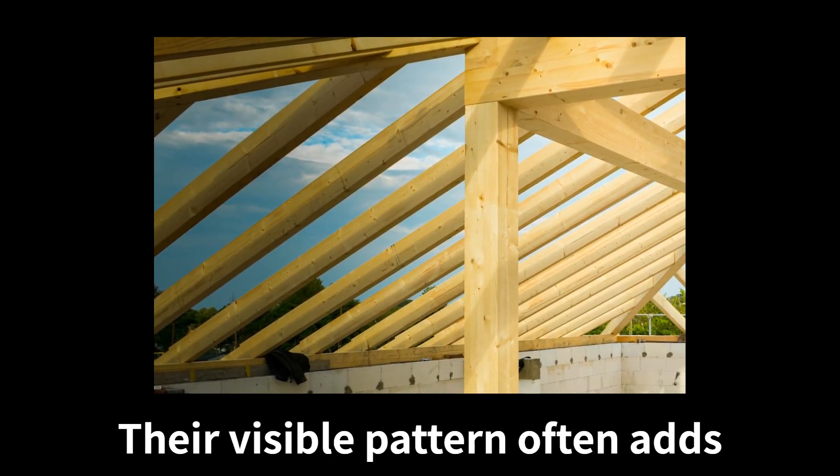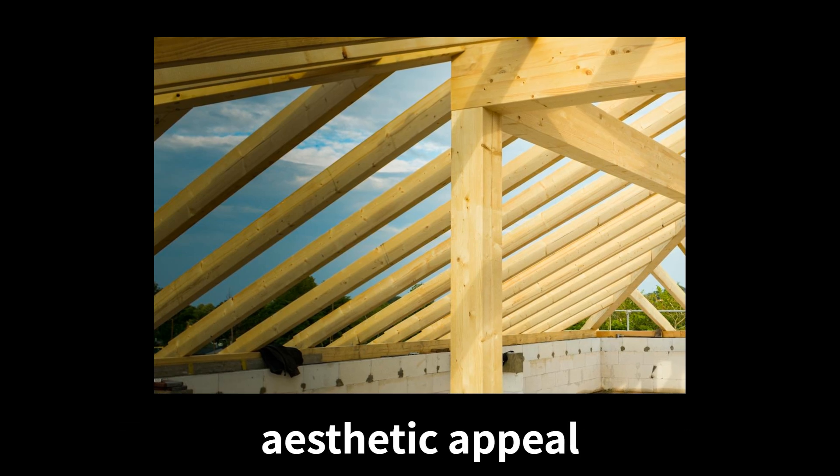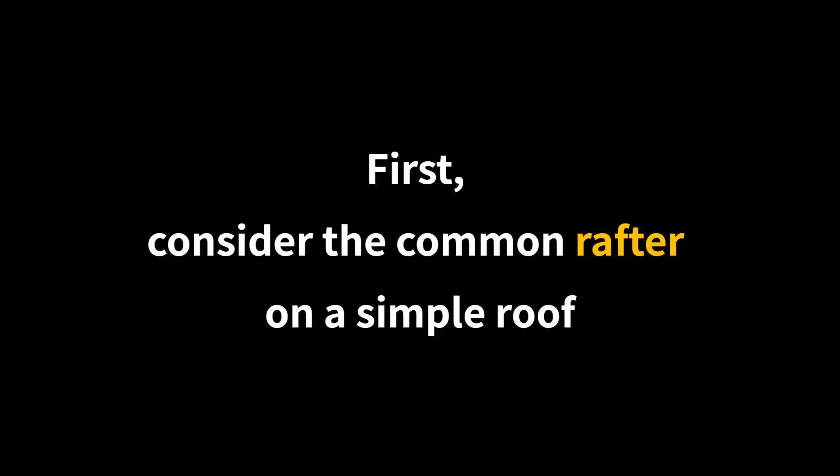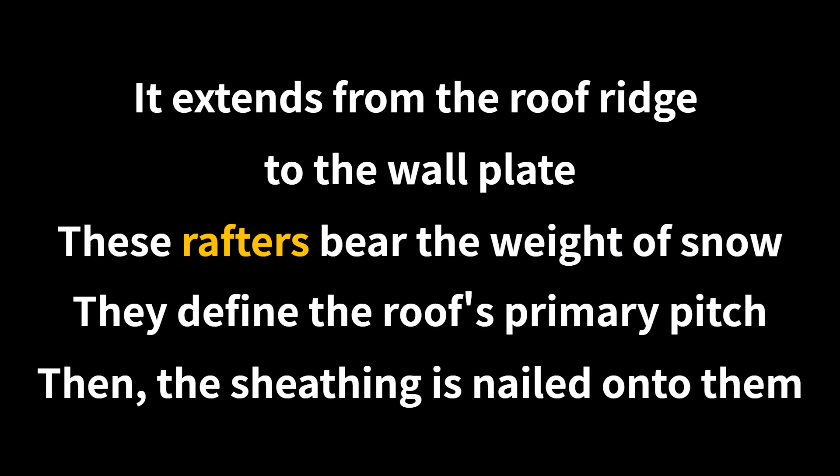Their visible pattern often adds aesthetic appeal. First, consider the common rafter on a simple roof. It extends from the roof ridge to the wall plate. These rafters bear the weight of snow. They define the roof's primary pitch. Then, the sheathing is nailed onto them.